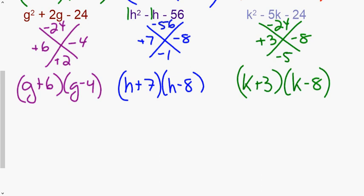The last problem has negative 24 again, but this time the bottom number is negative five. Six and four don't work because six minus four is only two apart, not five. I need a different factor pair that multiplies to 24 and is five apart — that's three and eight. Three minus eight gives negative five, so the factors are (k + 3)(k − 8).